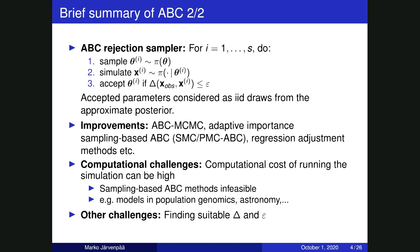The most basic ABC method is perhaps the ABC rejection sampler, where at each step we first sample one parameter from the prior, then use this parameter to simulate one pseudo data set from the model, and finally accept this parameter as an IID draw from the approximate posterior if the corresponding discrepancy value is smaller than epsilon. This ABC rejection sampler can be quite inefficient, and there has been a lot of work on developing more efficient sampling-based methods. In this talk, we are interested in cases where the computational cost of running the simulation can be very large — for example, minutes or even hours — so that standard sampling-based ABC methods cannot really be used.